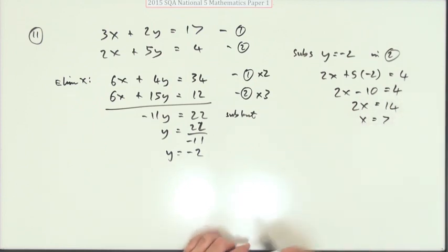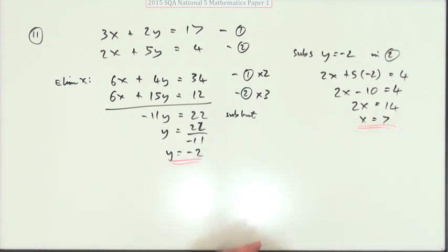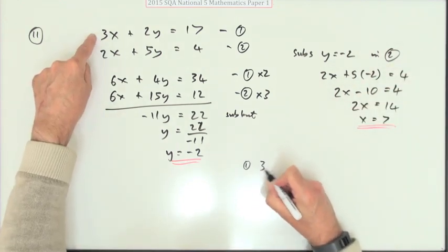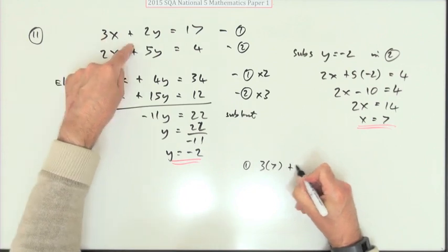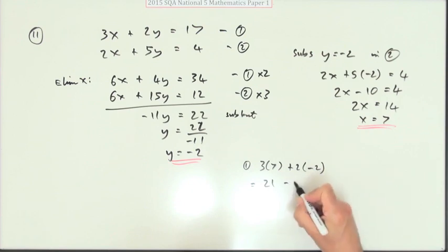So there's my answer. y is negative 2, x is 7. You always do a little check. I use number 2, check that with number 1 just as a quick check. 3 times 7 plus 2 times negative 2, what does that come to? Well, that's 21 and that's minus 4, and 21 minus 4 is 17, so that must be right.